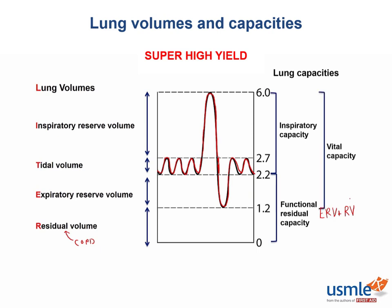The vital capacity is the tidal volume plus the inspiratory reserve volume plus the expiratory reserve volume — basically, it's everything except the residual volume. So it represents the total amount of air you would breathe in if you first exhaled as much as possible and then inhaled as much as possible. Finally, how do we determine total lung capacity? Basically it's everything: IRV plus TV plus ERV plus RV.